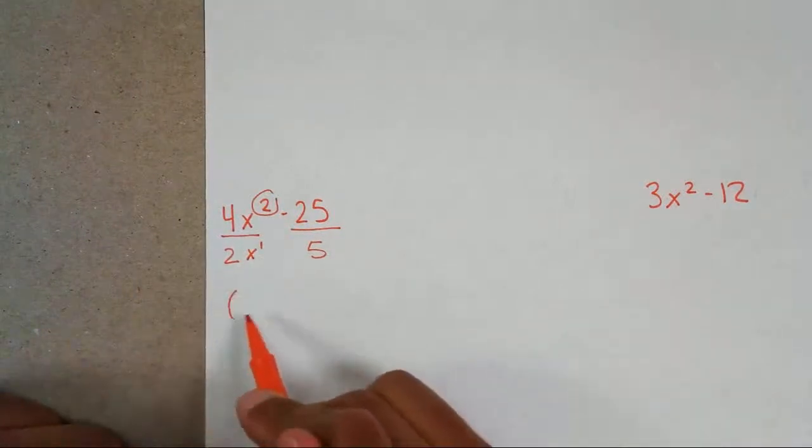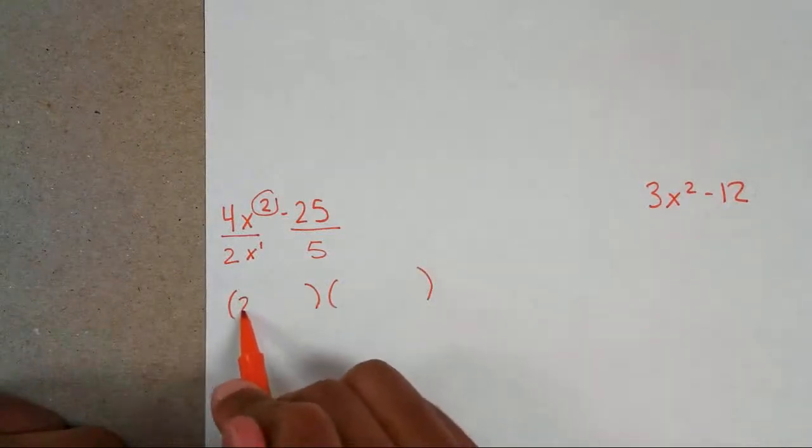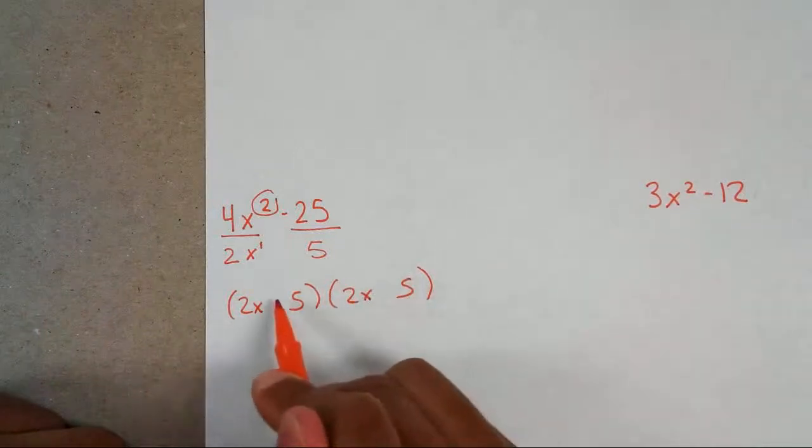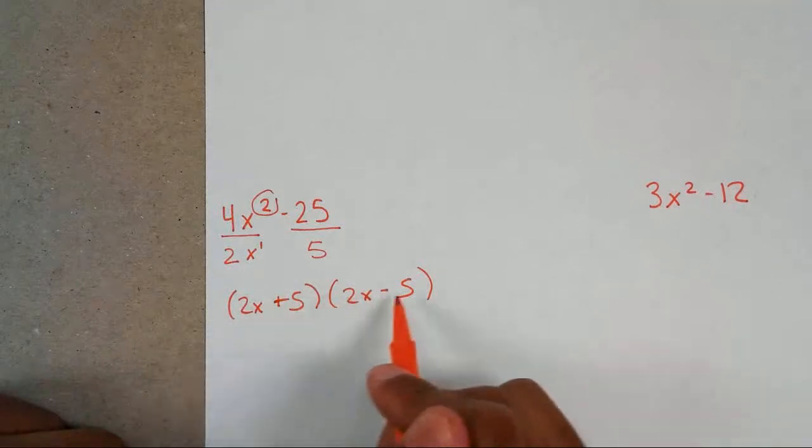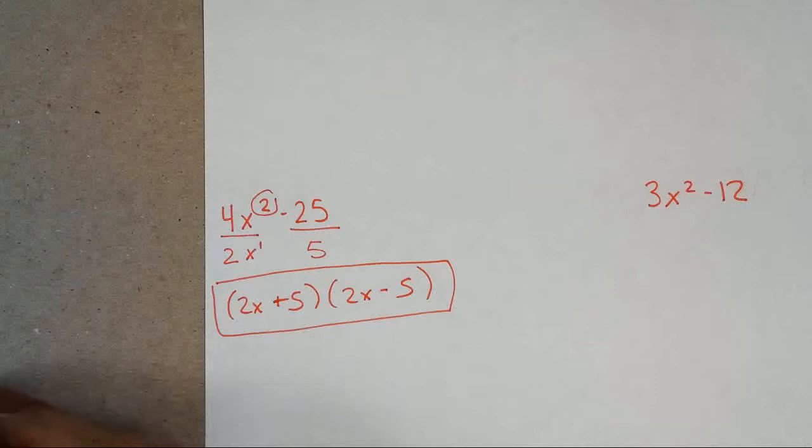Your next step is to put your answers, your bases, in your parentheses. 2x, 5. 2x, 5 with opposite signs. Now the signs don't matter. This one could be a plus sign, this could be a minus sign, or it could be vice versa. As long as you have a plus and a minus with your bases, that's all that matters. And that's your answer.